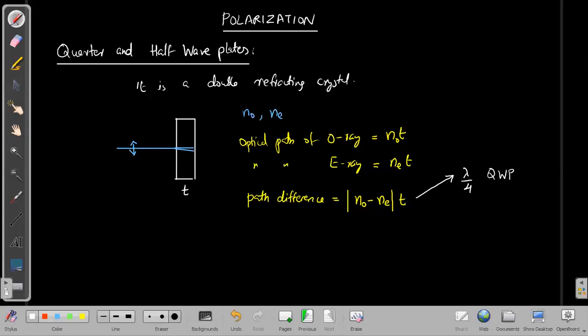And what would be the half wave plate? When the path difference is lambda by 2, it is called a half wave plate. So it's a very simple definition for a double refracting crystal.